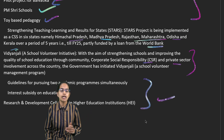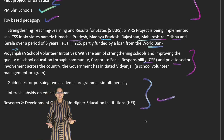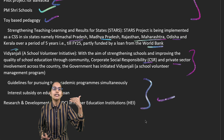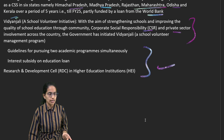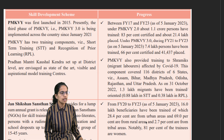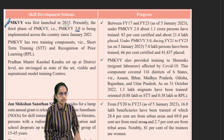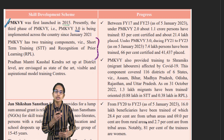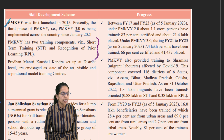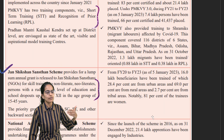Further developments under the New National Education Policy include pursuing two academic programs simultaneously — one in online mode and the other offline — providing interest subsidies on educational loans, and creating R&D cells in higher educational institutions. The Pradhan Mantri Kaushal Vikas Yojana was launched in 2015, with version 3.0 implemented in 2021, focusing on short-term training and recognition of prior learning. The Jan Shikshan Sansthan Scheme trains people who are non-literate or have rudimentary education.